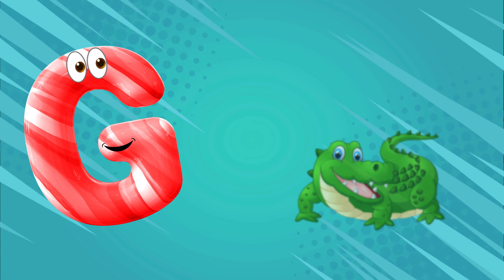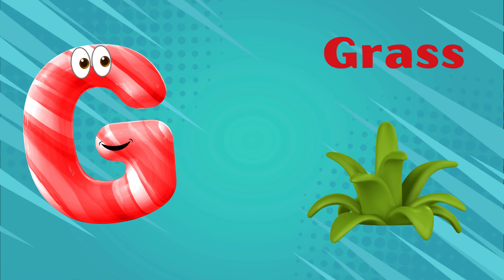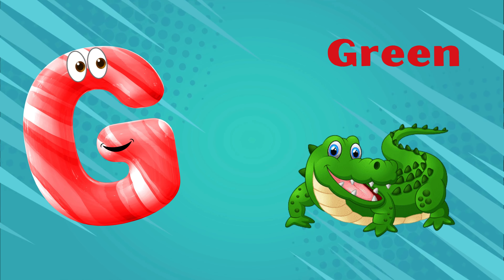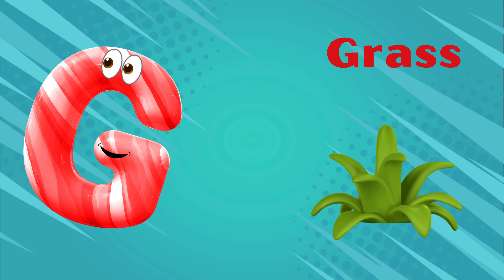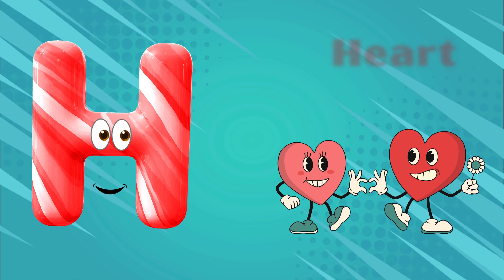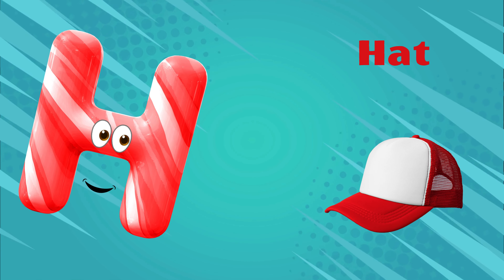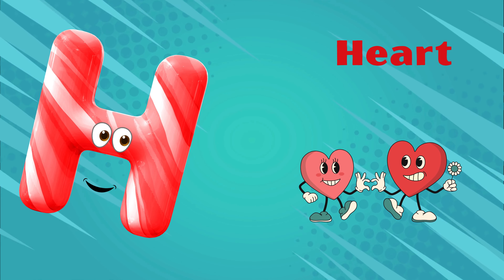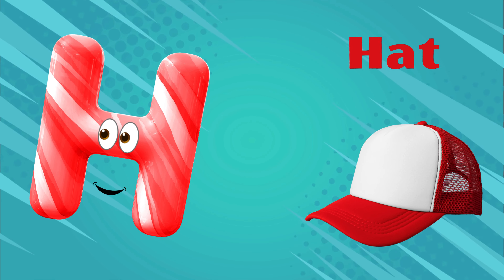G is for green, g-g-green. G is for grass, g-g-grass. G is for g-g-g-green. G is for g-g-g-grass. H is for hat, ha-ha-hat. H is for head, ha-ha-head. H is for ha-ha-ha-hat.